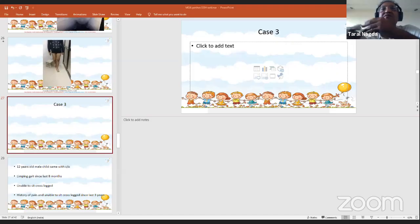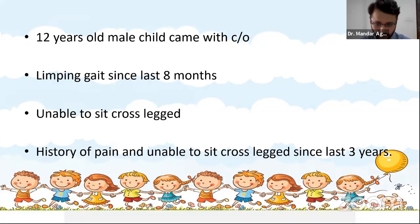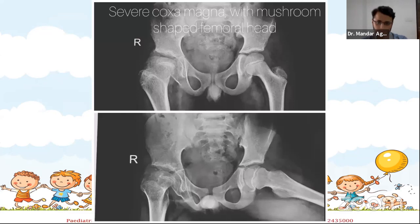Moving to Mandar's case: a 12-year-old male with a history of limping gait for eight months, unable to sit cross-legged for almost three years — a long-standing history. On examination he has a flexion deformity of about 20 degrees with further flexion okay, but a fixed adduction and external rotation deformity. He is unable to squat or sit cross-legged.